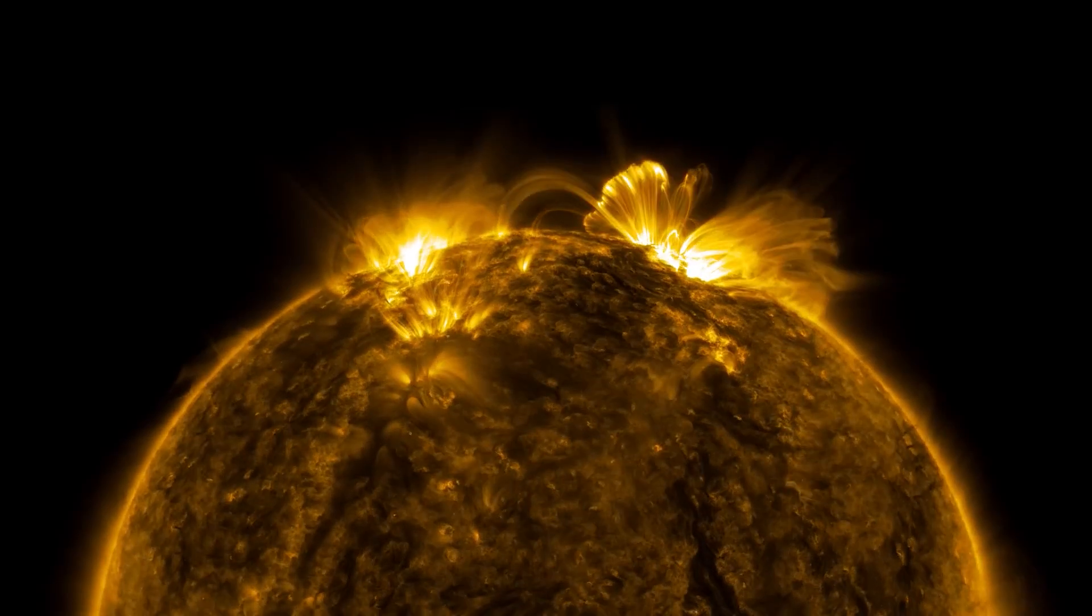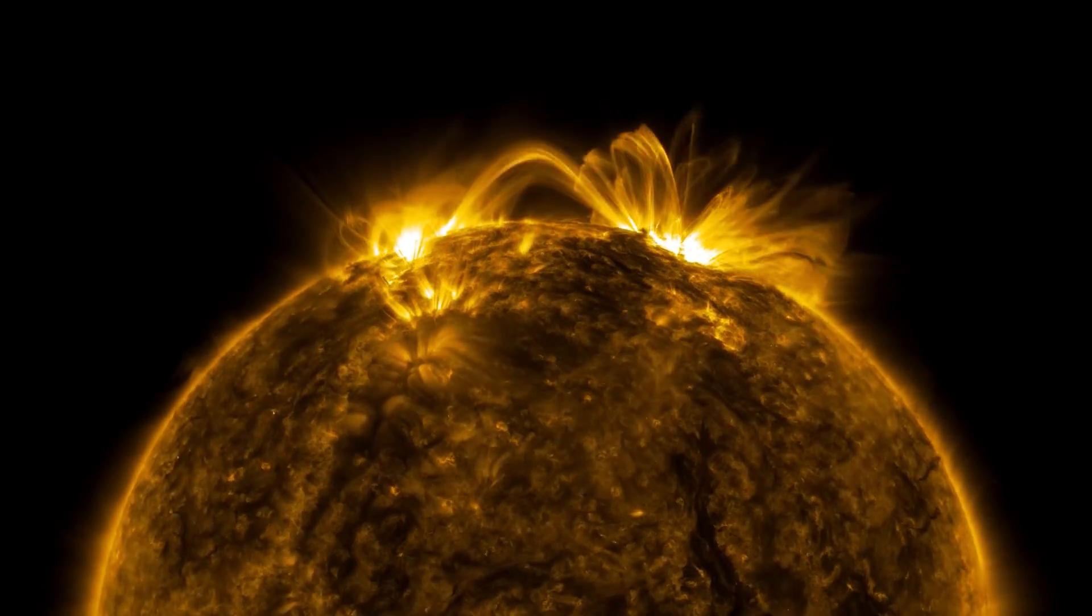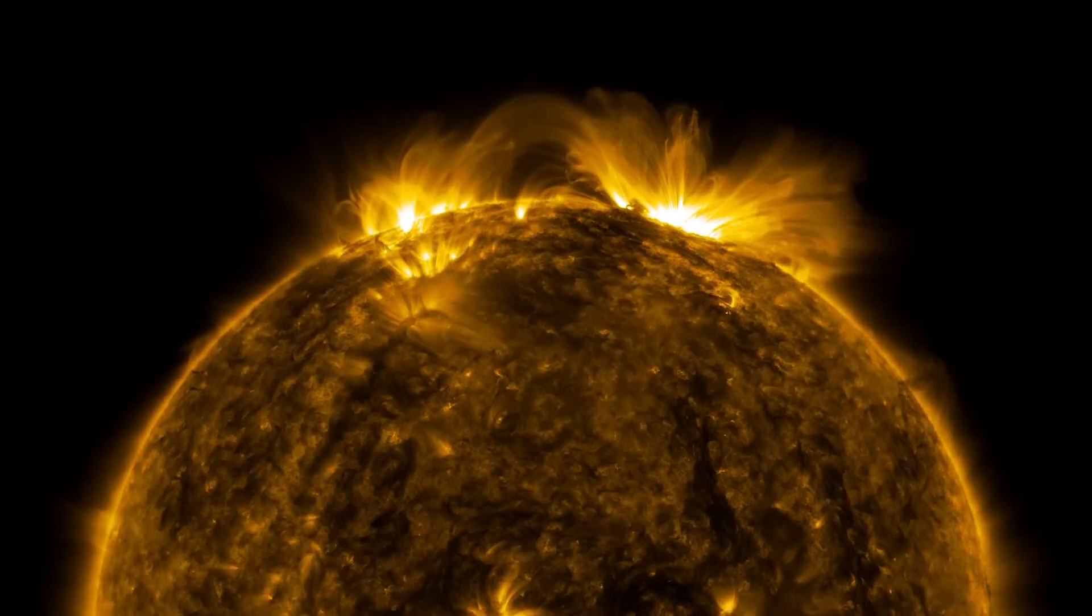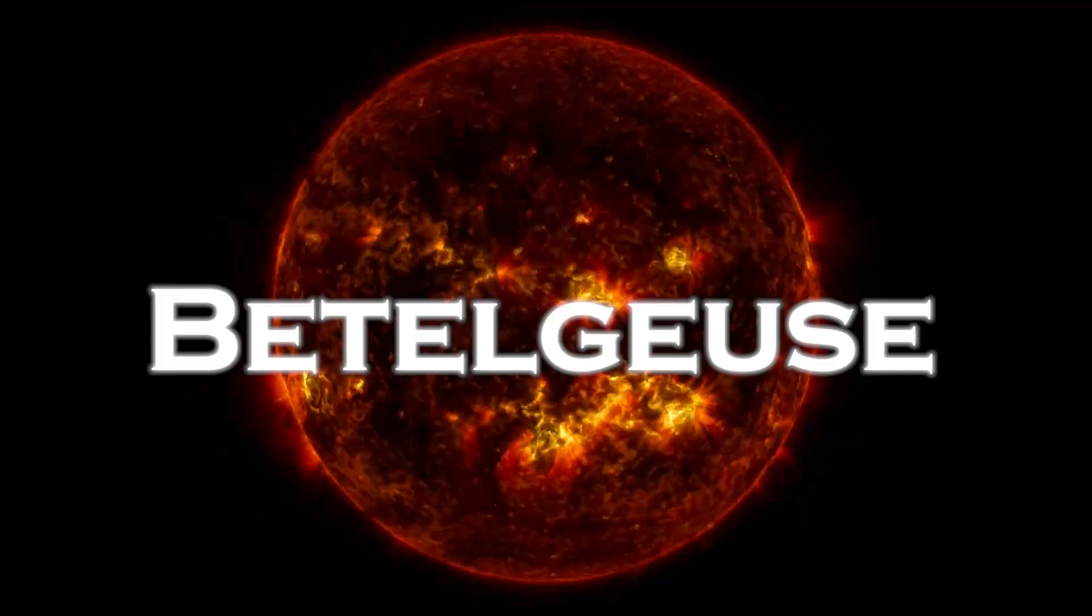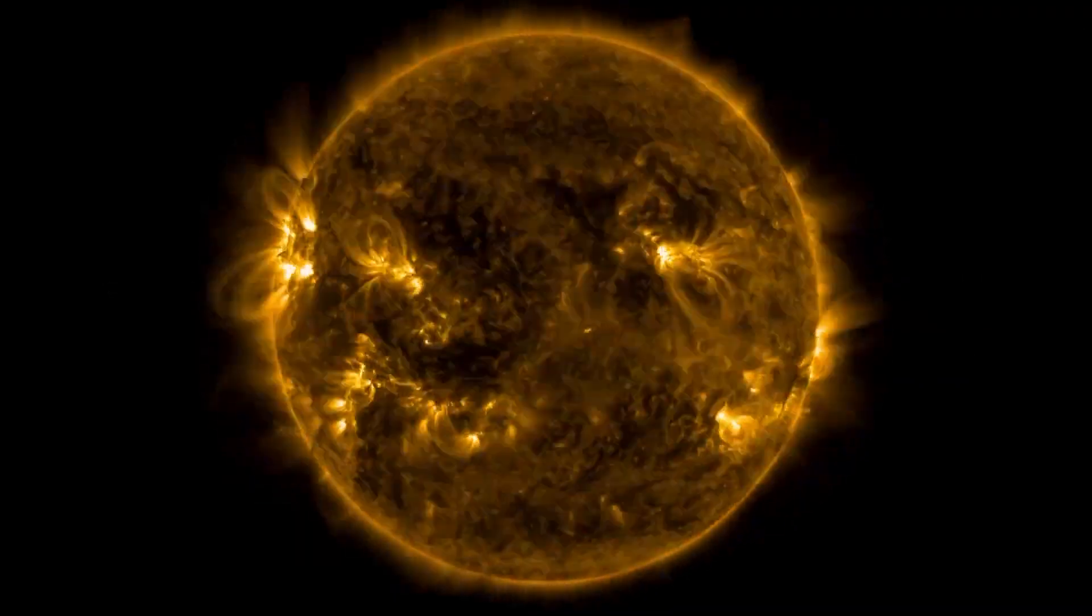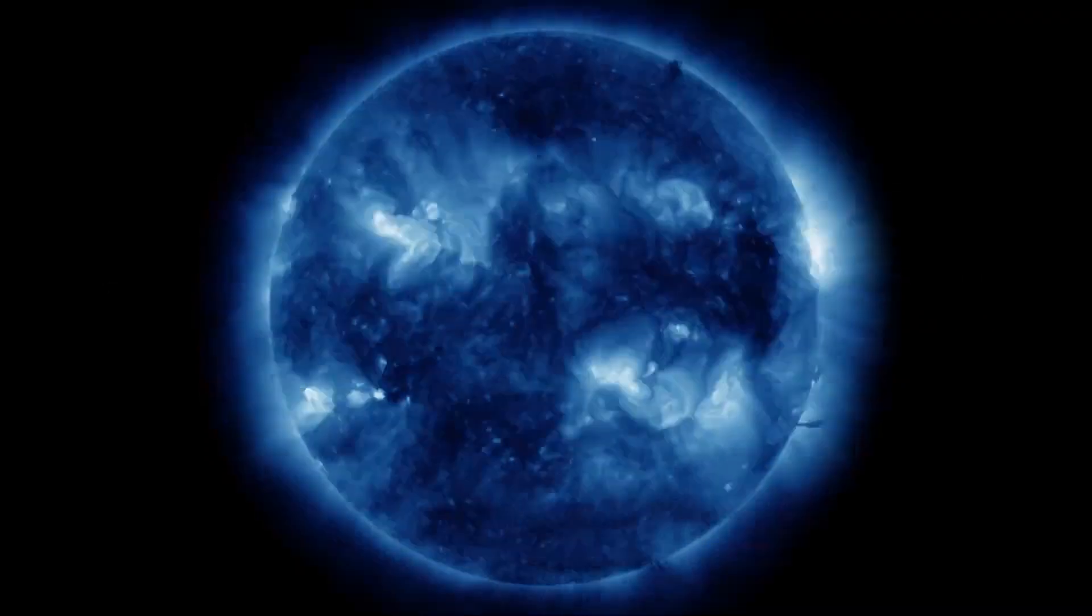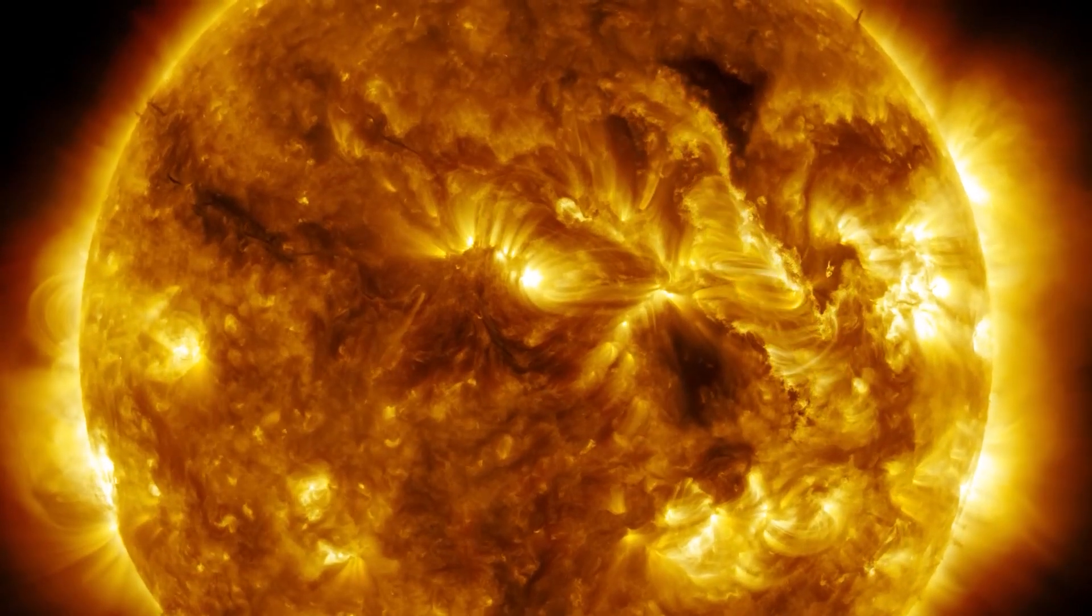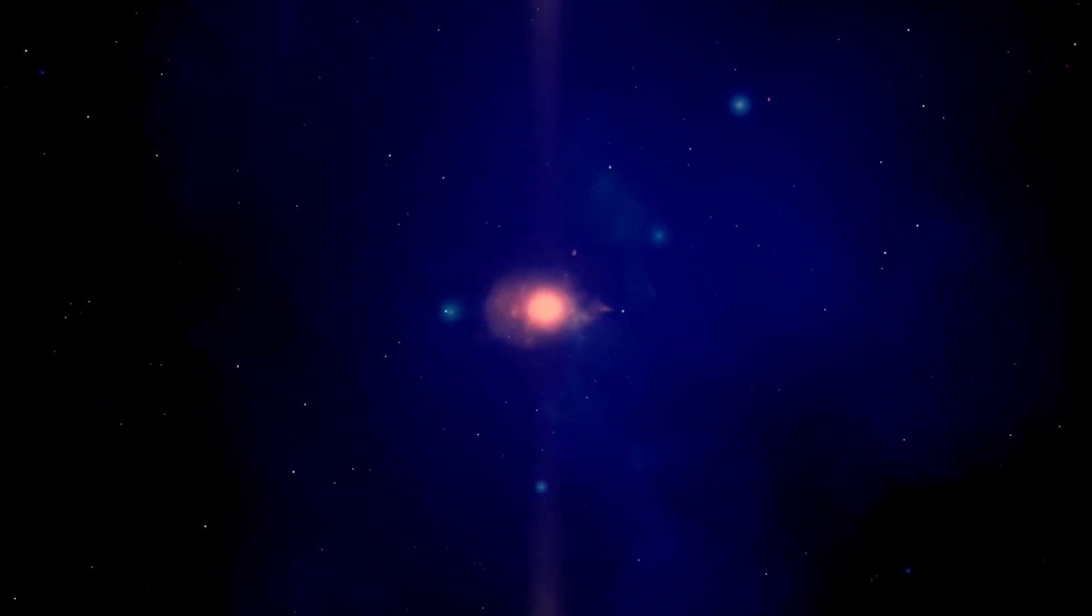Large stars tend to consume their hydrogen rapidly, bringing them to a premature end, even if their lifetime is only 10 million years. There is no doubt that Betelgeuse is in the last stages of its existence. While our Sun still has more than 5 billion years to go, Betelgeuse is nearing the end of its life, which means that at some point it could explode as a supernova.